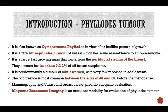Regarding the introduction of phyllodes tumour: it is also known as cystosarcoma phyllodes because of its leaf-like pattern of growth. It is a rare fibroepithelial tumour of the breast which has some resemblance to a fibroadenoma. It is a large, fast-growing mass that forms from the periductal stroma of the breast, and accounts for less than 0.3 to 1 percent of all breast neoplasms. It predominantly occurs in adult women before menopause, between the ages of 40 and 60, with very few cases reported in adolescence. Mammography and ultrasound cannot provide adequate evaluation, and MRI is an excellent modality for evaluation of phyllodes tumour.